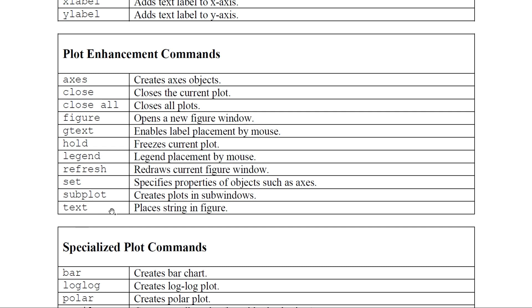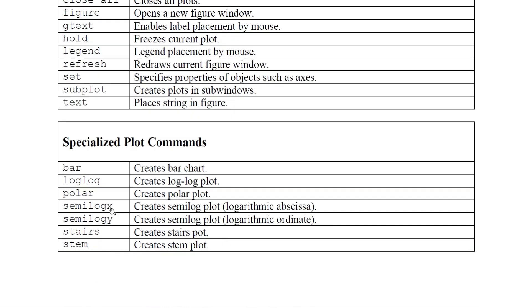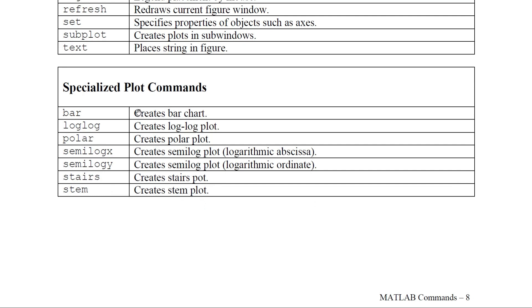subplot creates sub-windows when you have multiple plots. text places a string in the figure. Different plot types available: bar creates a bar chart using bar(x, y); loglog plots on log-log scale; polar creates a polar plot; semilogx and semilogy use a semi-log scale; stairs creates a staircase plot; stem creates a stem plot, which requires x, y, and z.